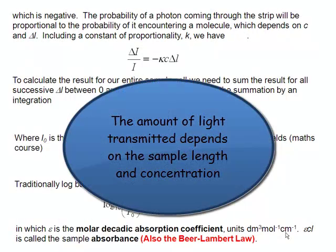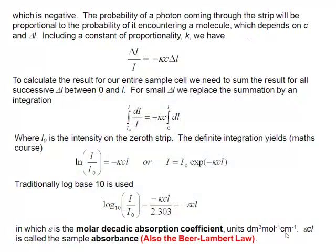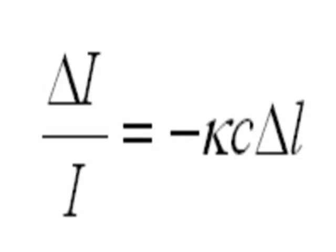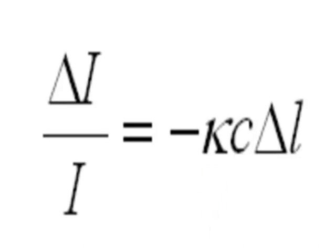And also, it depends on delta L. Because if the sample is longer, then there's a greater chance that the photon of light will be absorbed, because it has a greater chance of encountering an absorbing molecule. So delta I over I is going to be proportional to concentration and delta L, the length of that strip of the sample. And so we put a constant of proportionality in there, which I'm calling kappa. And since the way we've defined delta I, delta I is always negative, then that's where the negative sign comes from.